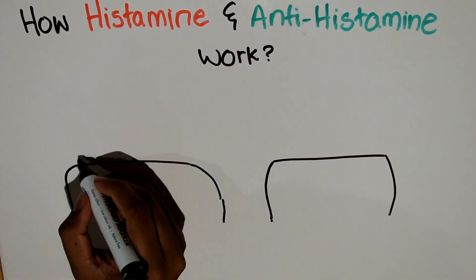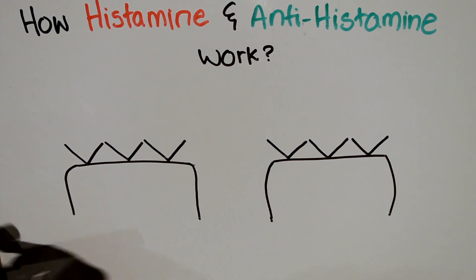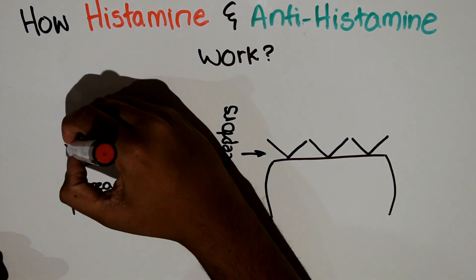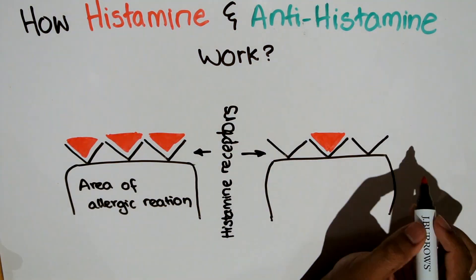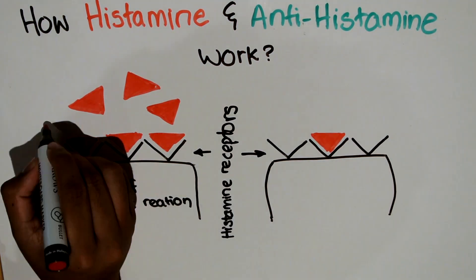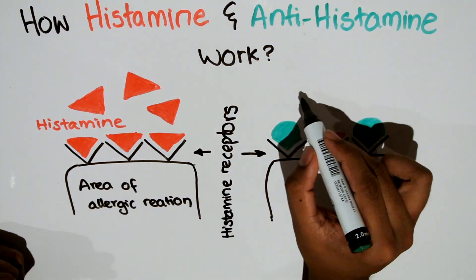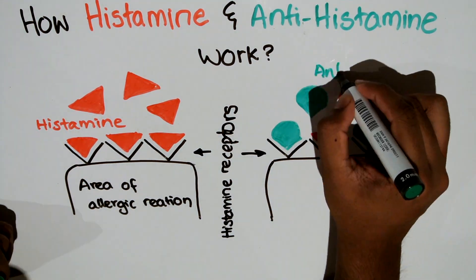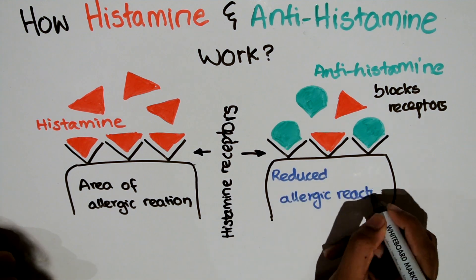So how does this work in the body? When antihistamines are put into the body, histamine has to compete with antihistamines to bind to the receptor. If there are more of the antihistamines binding to a receptor at a particular site, there will be less of a response.